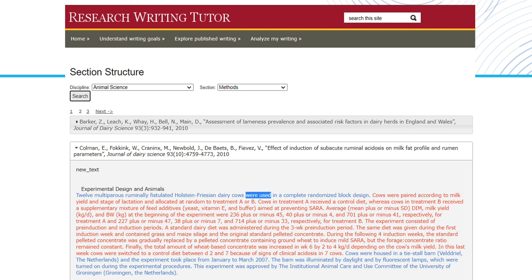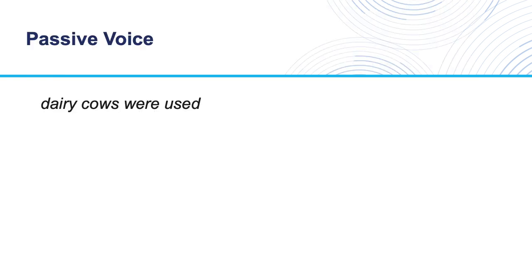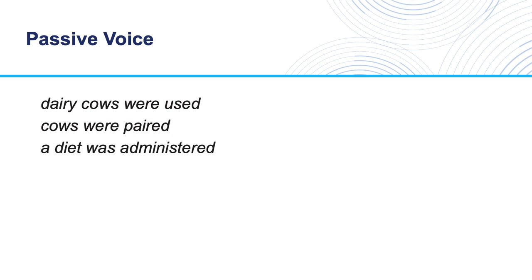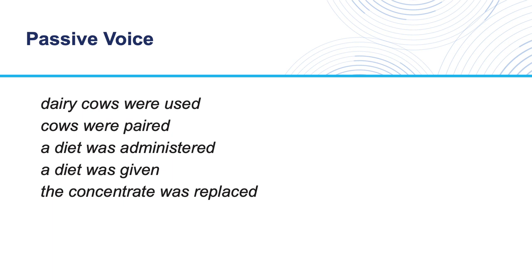What students generally find is that passive voice is most commonly used in methods sections when describing the study procedures. In the example, passives appear throughout the description — for example, dairy cows were used, cows were repaired, a diet was administered, a diet was given, the concentrate was replaced, and the concentrate was increased.